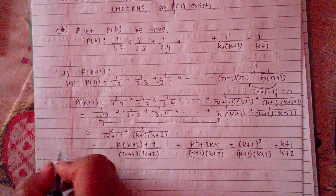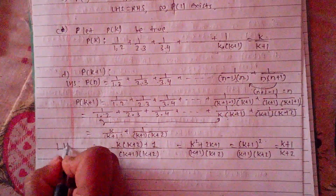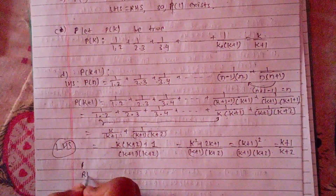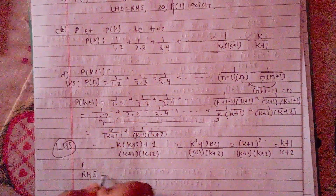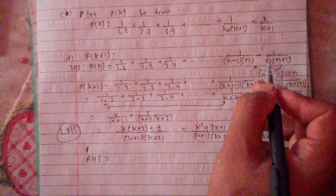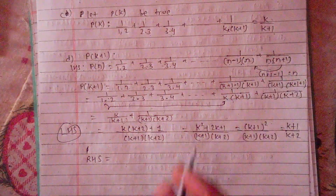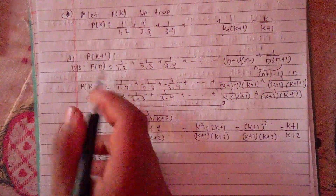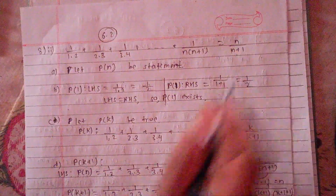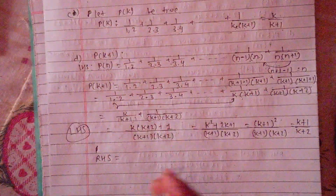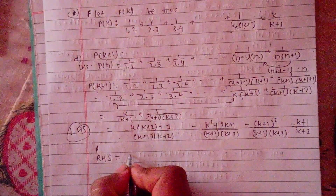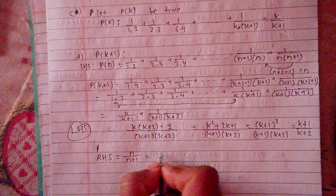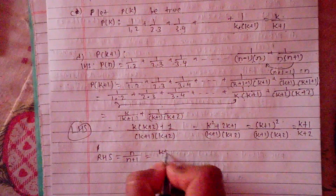This is the LHS. Now the RHS is n/(n+1), where n = k+1. So RHS = (k+1)/(k+2). Therefore LHS equals RHS, confirming P(k+1) is true.